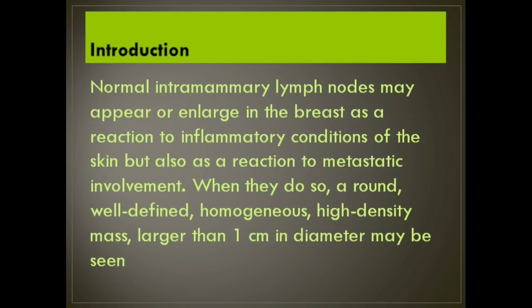Normal intramammary lymph nodes may appear or enlarge in the breast as a reaction to inflammatory conditions of the skin, but also as a reaction to metastatic involvement. When they do so, a round, well-defined, homogeneous, high-density mass larger than 1 cm in diameter may be seen.